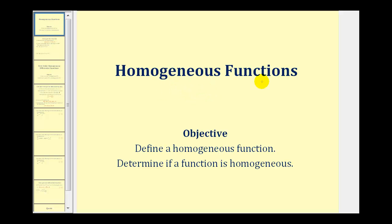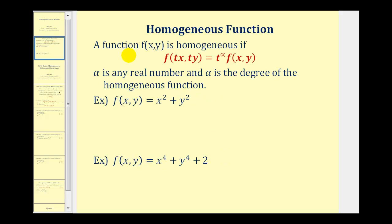Welcome to a lesson on homogeneous functions. A function f(x,y) is homogeneous if f(tx,ty) equals t raised to the power of alpha times the original function f(x,y).